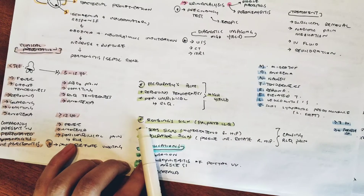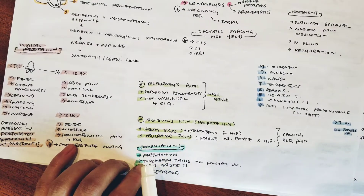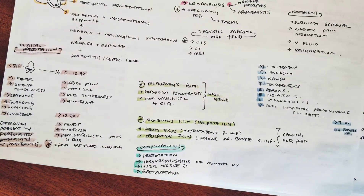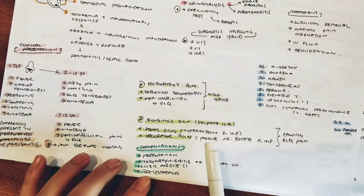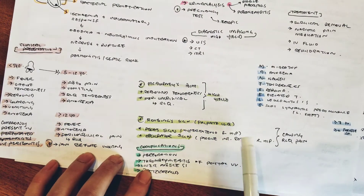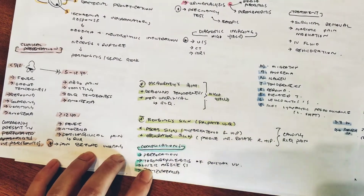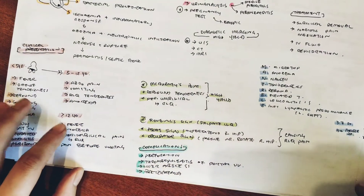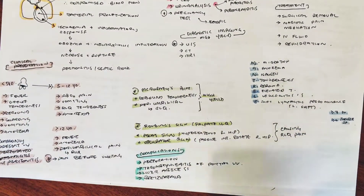Rovsing's sign is almost the opposite of McBurney's point. You palpate in the left lower quadrant, and that elicits tenderness and pain in the right lower quadrant. The other two signs — the psoas sign and obturator sign — are used to screen for or diagnose appendicitis, but are not as commonly used as McBurney's point and Rovsing's sign.